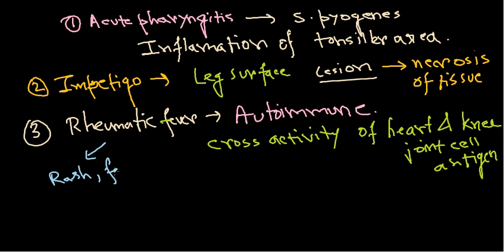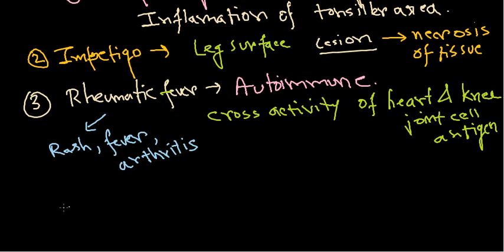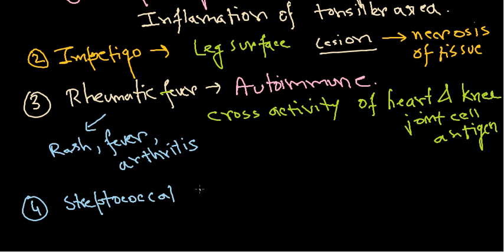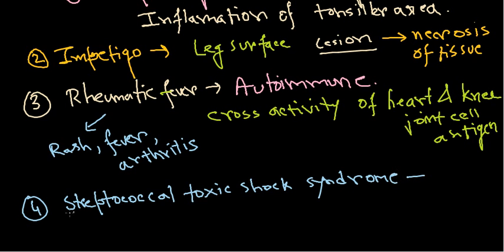Rheumatic fever can result in several symptoms like rash, fever, and arthritis — it is also associated with rheumatoid arthritis, which is a very common type. In this case, the disease is playing against our own immune system. The fourth disease caused by Streptococcus is streptococcal toxic shock syndrome — I specify 'streptococcal' because toxic shock syndrome is also caused by Staphylococcus aureus.